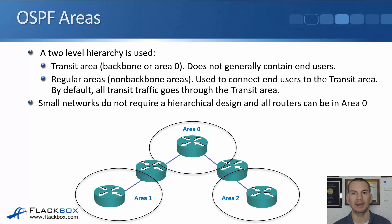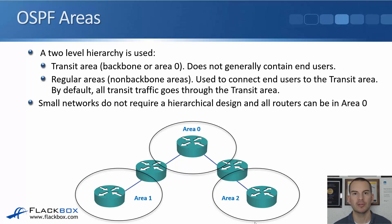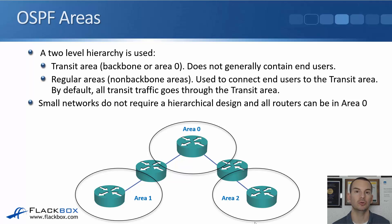Multiple areas are really only required if you have a larger network. In a small network there are fewer destination networks and fewer routes, so it's not a problem if routers know about all of them. In that case you don't need the hierarchical design and all routers can be in area zero. When you do have a single area design it will always be area zero, which also makes it easy to migrate to a multi-area design later if your network grows.